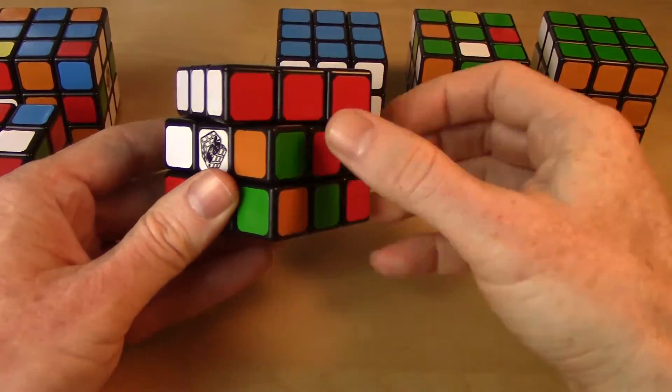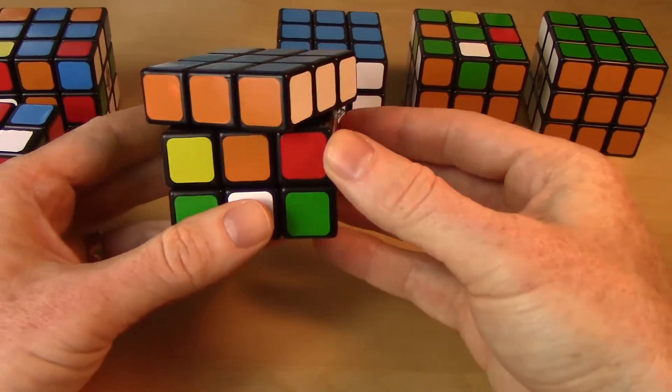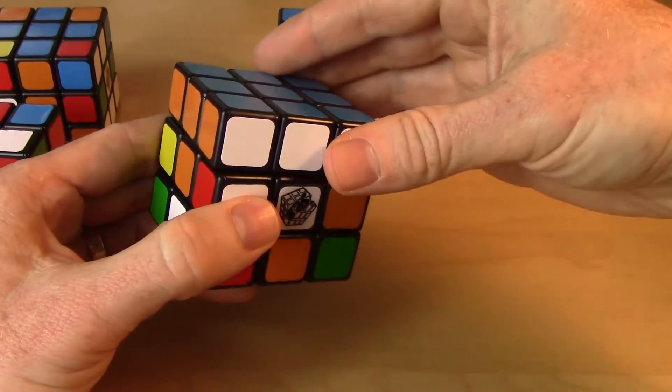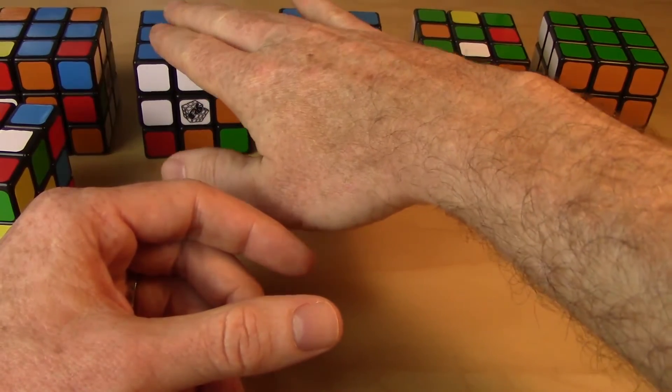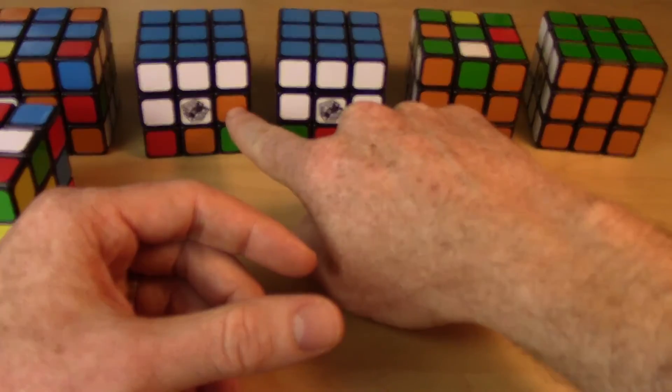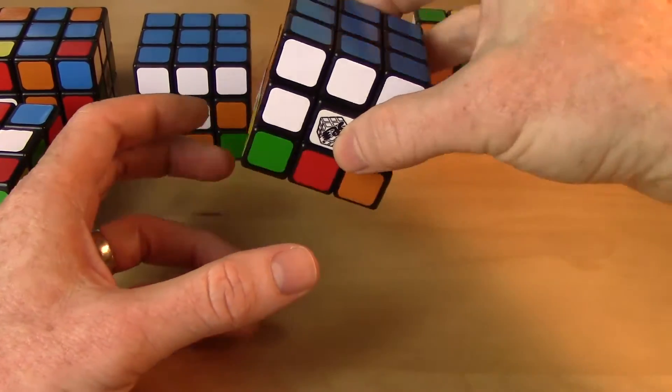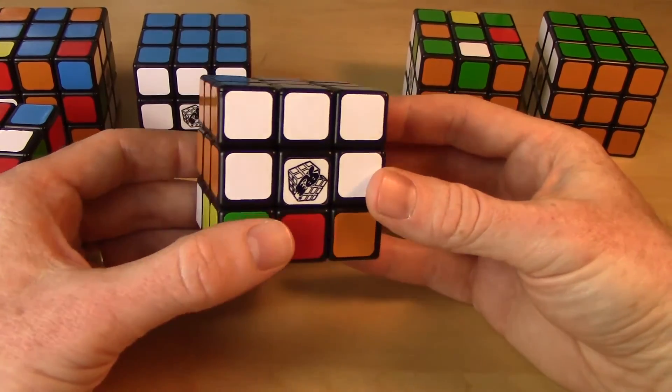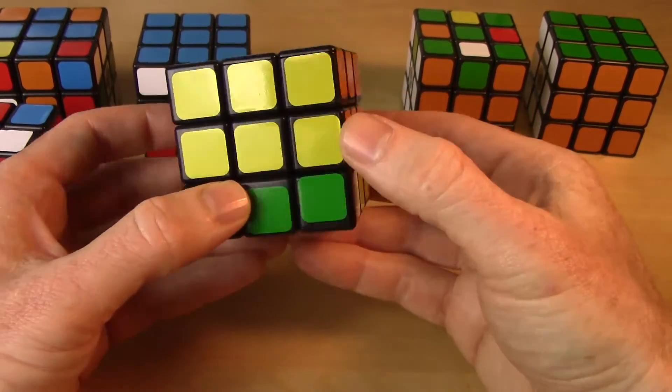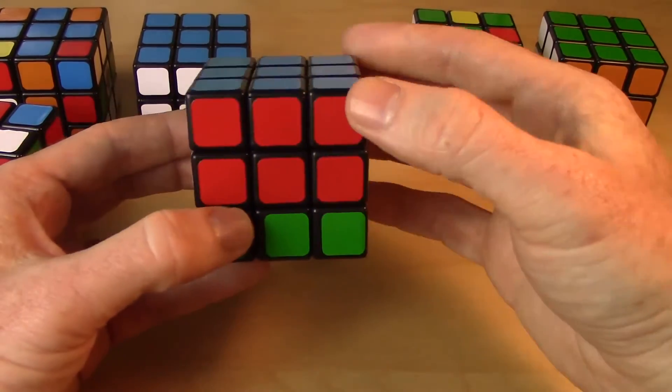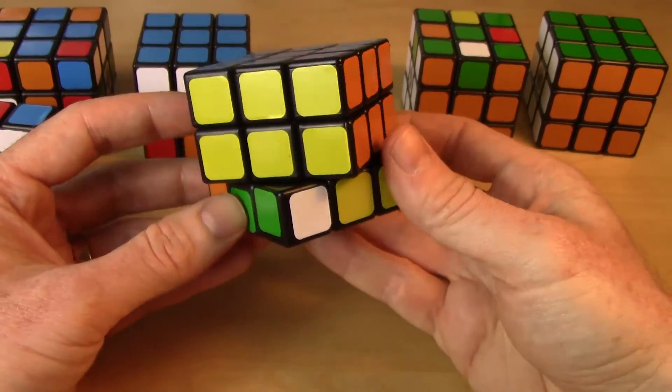Step three is then to go ahead and work on the middle layer and fill in the four edge cubies in the middle layer. So this is where things start to get tricky because we've already got one layer completely done and we need to now put stuff in the middle layer. That will involve temporarily disturbing the top layer but restoring it as quickly as we can. And that's where we're going to start to learn some move sequences that allows us to move pieces into those middle edge spots without disturbing the top. So at the end of that step, it'll look like this, where the first two layers are done.